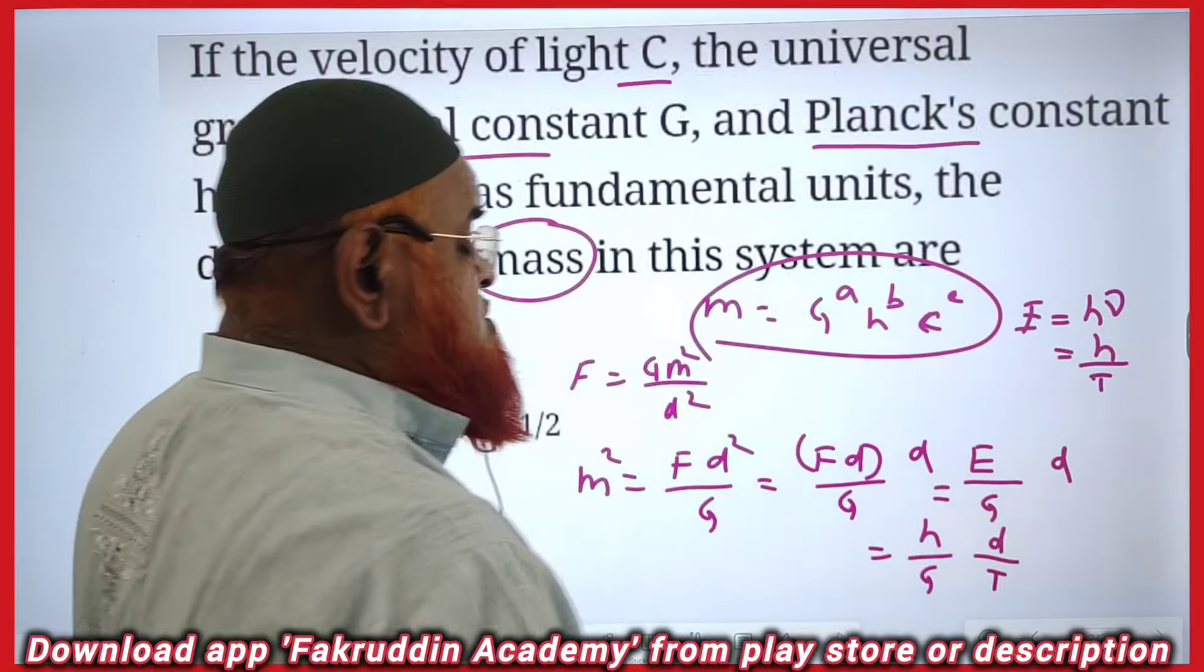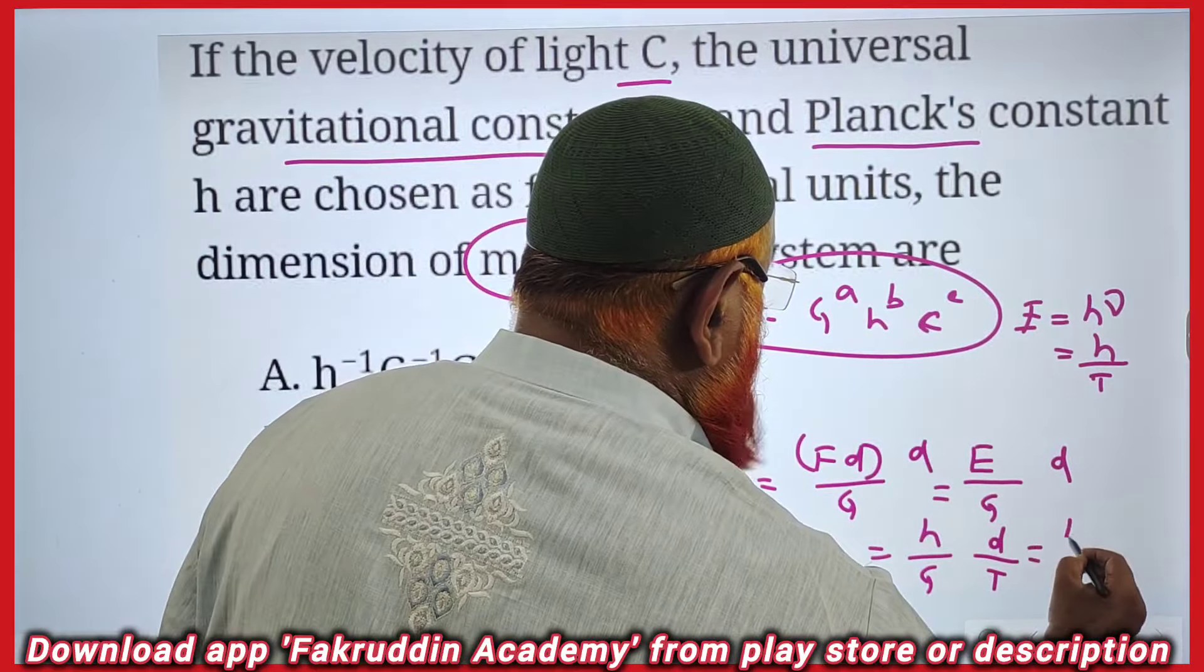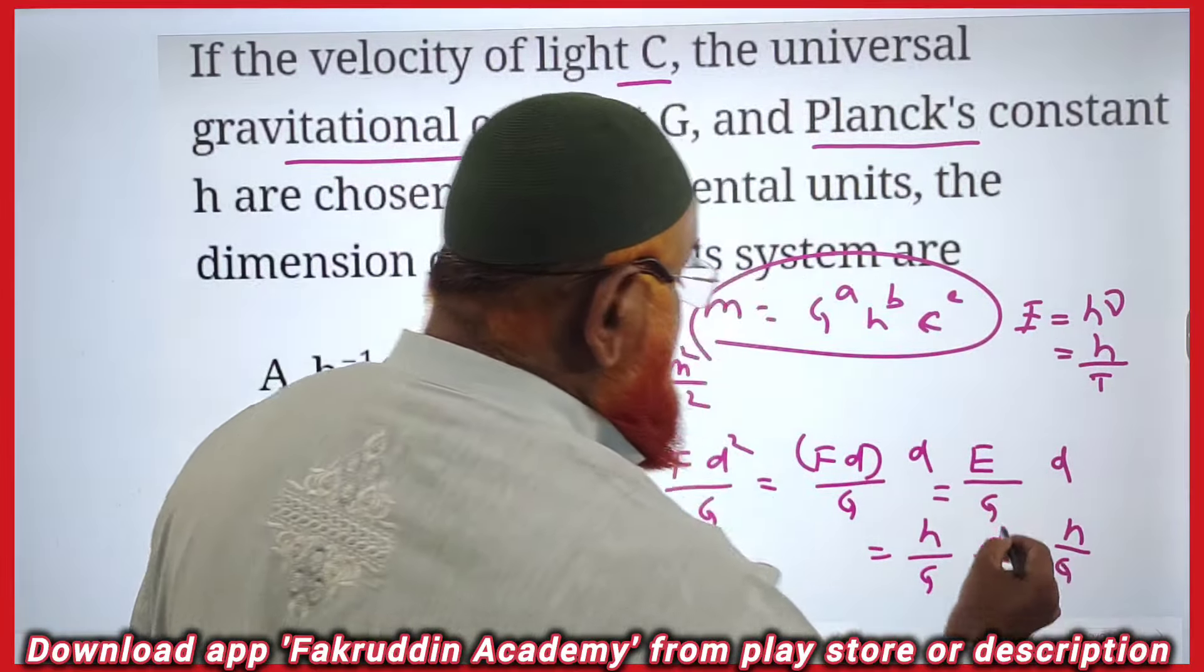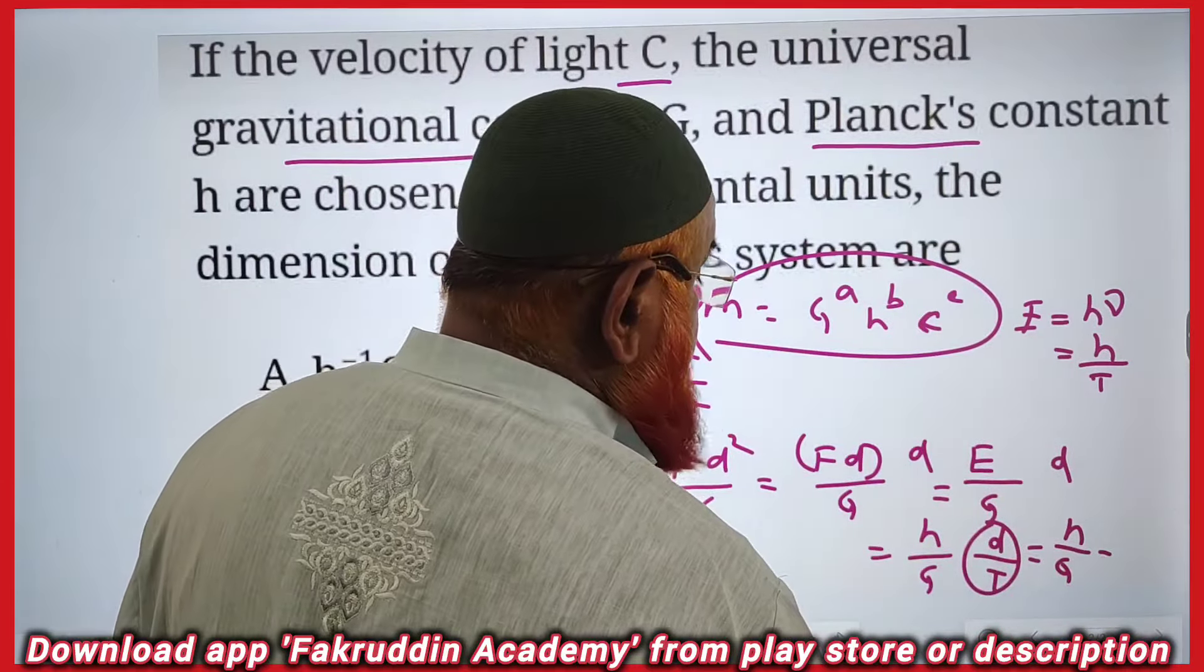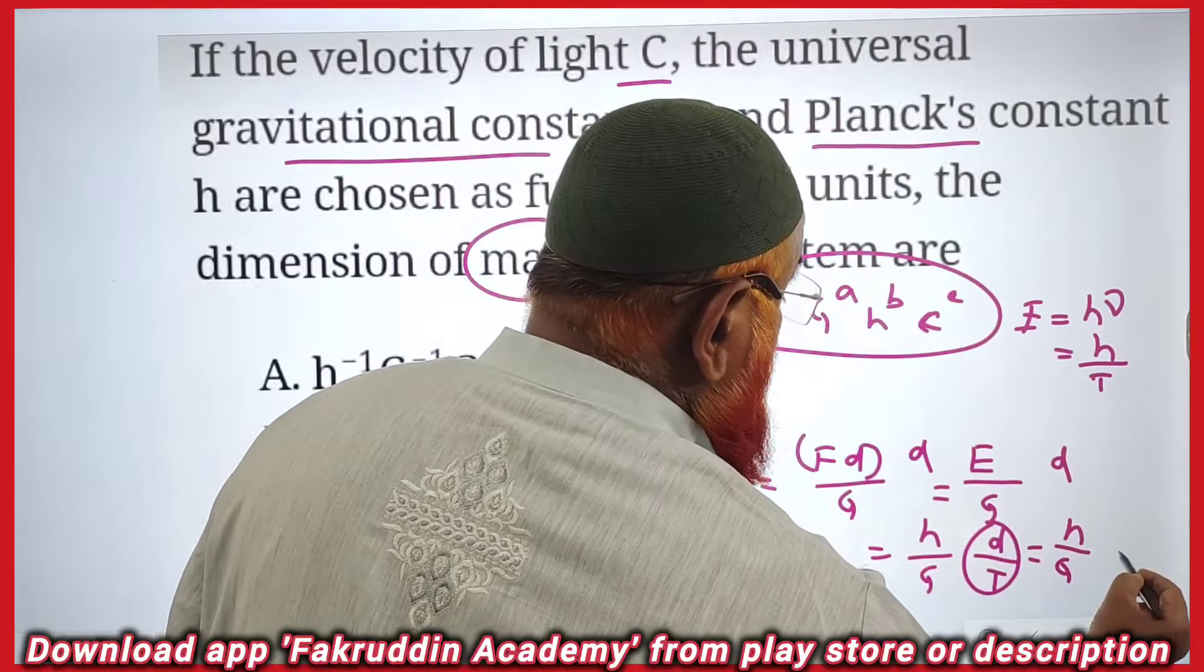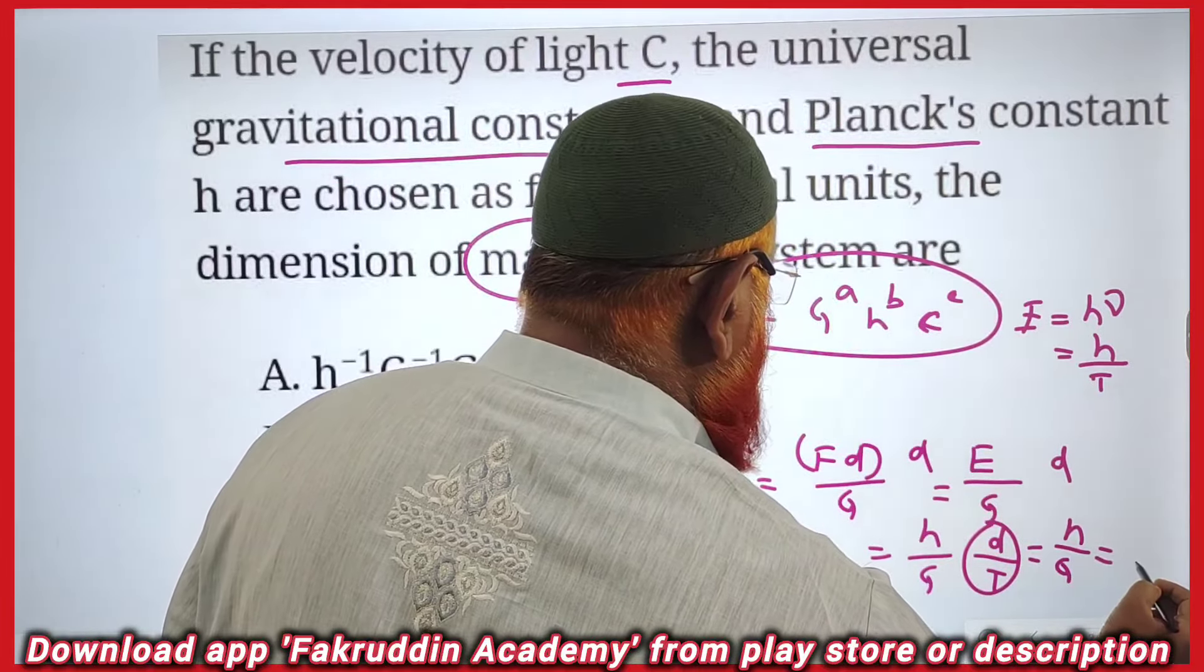h is here, G is here. So what is going to happen now? I will write h G. Distance by time can be taken as velocity. Distance by time I will take it as velocity. Velocity of light I am going to take now.